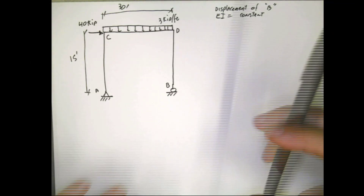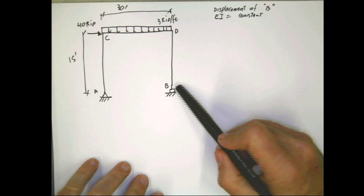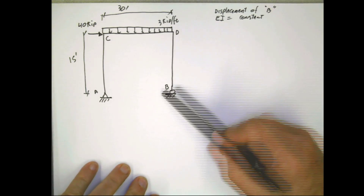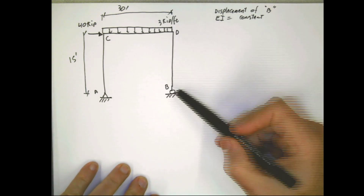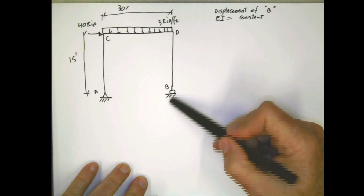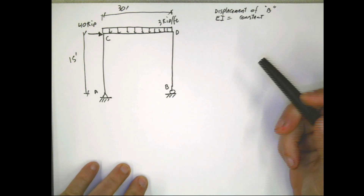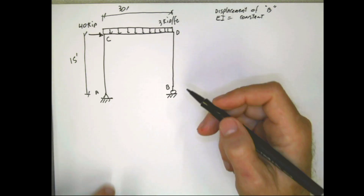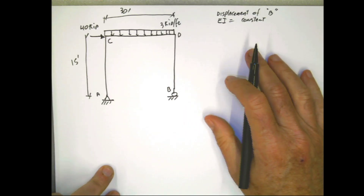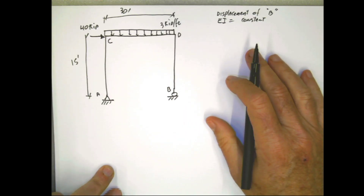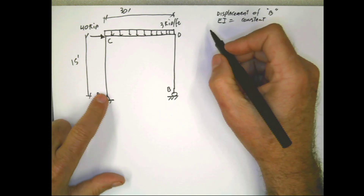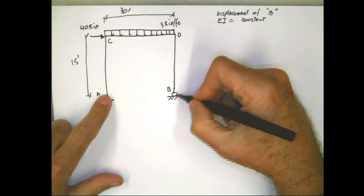The problem is asking us to calculate the displacement of point B — the horizontal displacement, unless you have a settlement at the support. So the first thing we have to do here is determine the reactions. We can do a summation of moments at A and calculate the reaction at B.